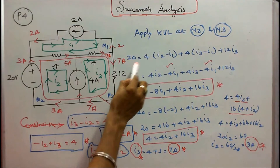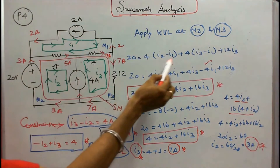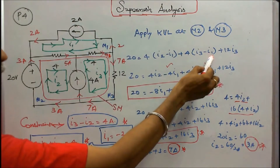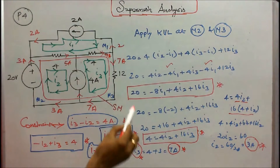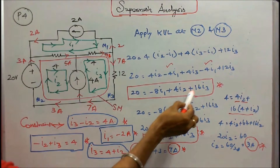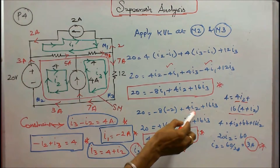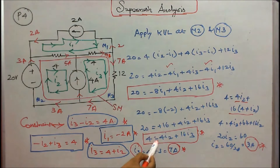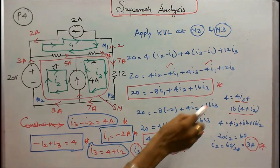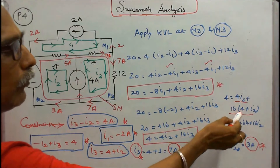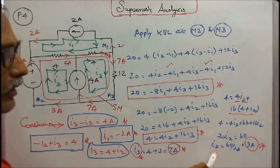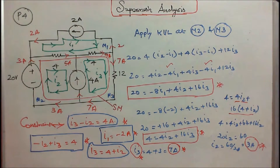Applying Kirchhoff's voltage law at meshes 2 and 3: 20 is equal to 4 into (I2 minus I1) plus 4 into (I3 minus I1) plus 12 I3. Simplifying: 20 is equal to minus 8 I1 plus 4 I2 plus 16 I3. Substituting I1 equals minus 2: 4 is equal to 4 I2 plus 16 I3. Substituting I3 equals 4 plus I2: 4 equals 4 I2 plus 16 into (4 plus I2). Solving, I2 is equal to minus 60 divided by 20, that is equal to 3 amps.